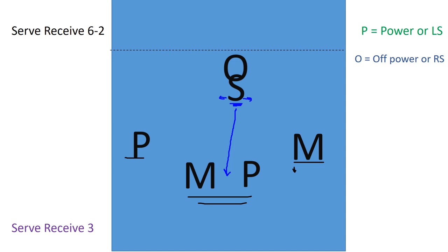With that being said, this off power hitter here is able to cheat this way, probably stopping about right here because they cannot cross the path of this middle right here or they're going to be out of rotation.